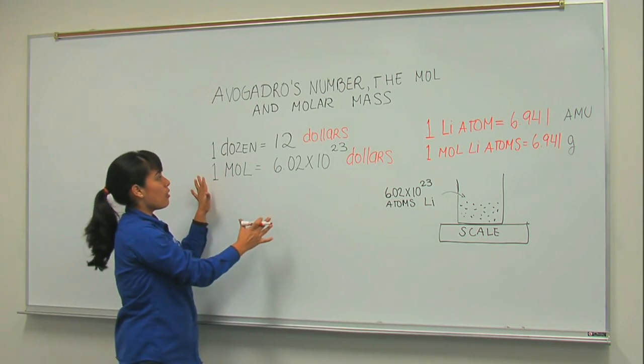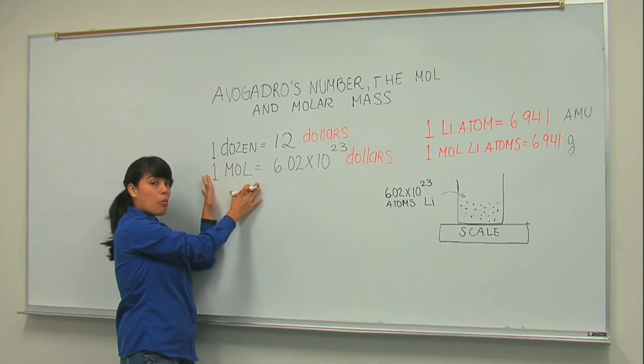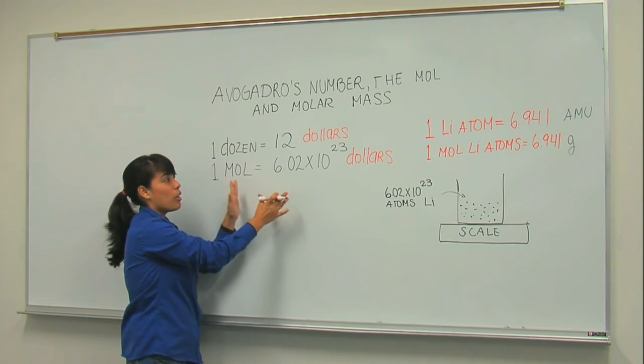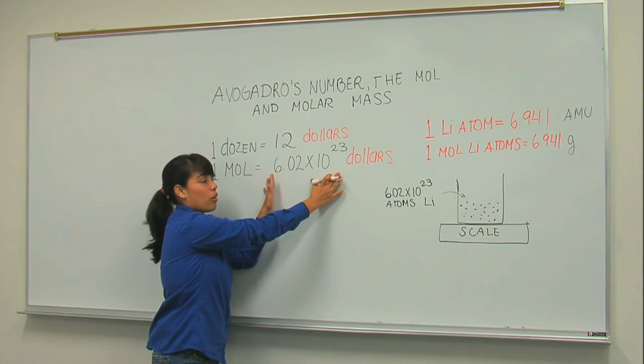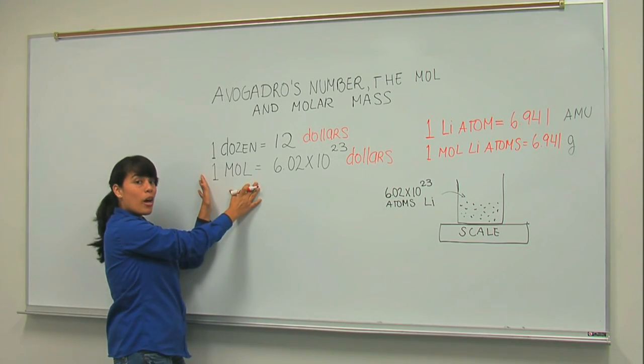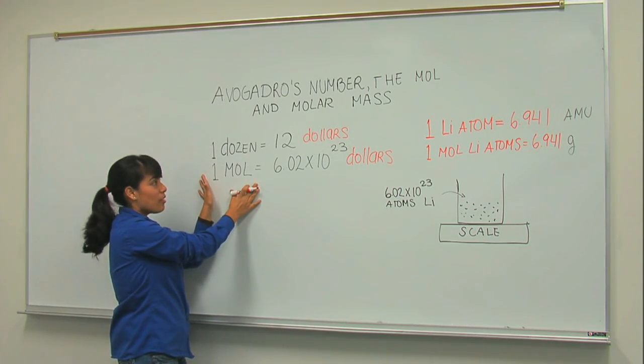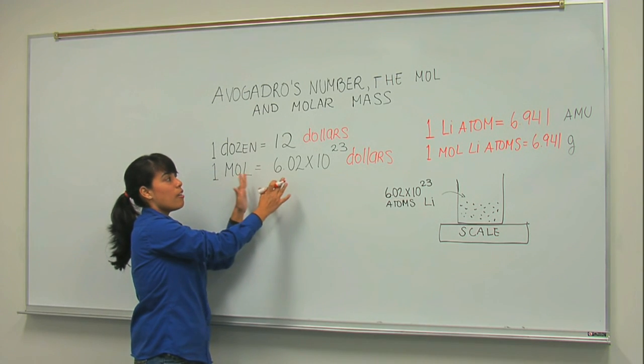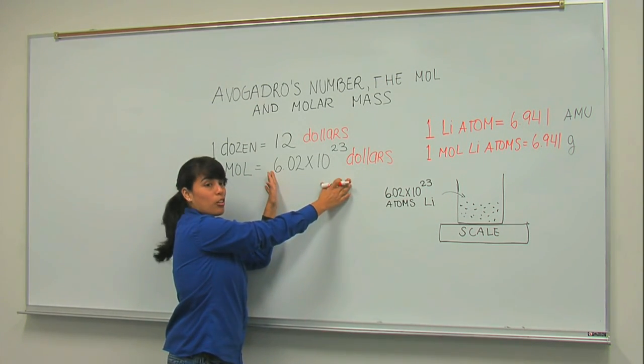Now that you know that, you need to know what a mole is. And a mole is just another way of saying Avogadro's number. So if you want one mole of dollars, it's the same as if you were saying that you want to earn 6.02 times 10 to the 23 dollars.